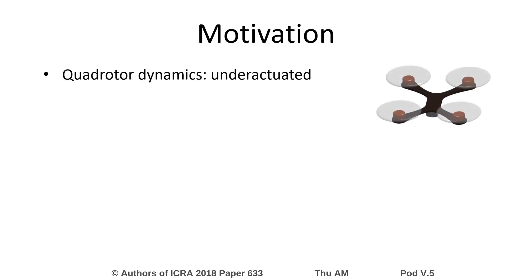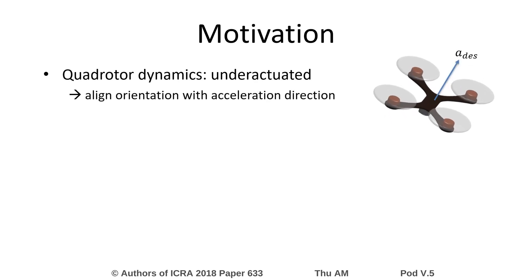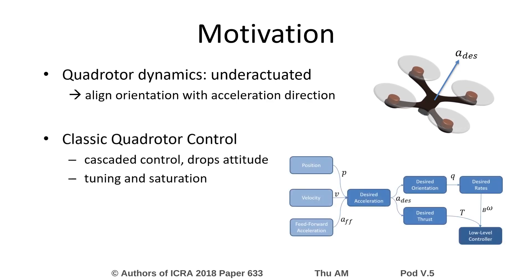In general, a quadrotor is an under-actuated system, where we have to align the attitude with the desired acceleration. In classic quadrotor control, this is done with a cascade of controllers, but such a cascade is difficult to tune for varying tasks and imposes restrictions and multiple saturations.